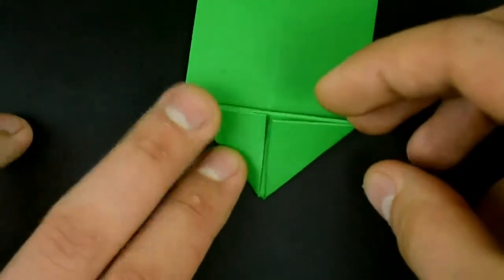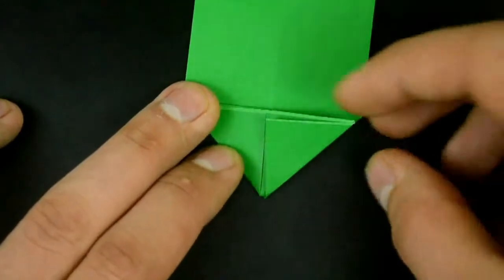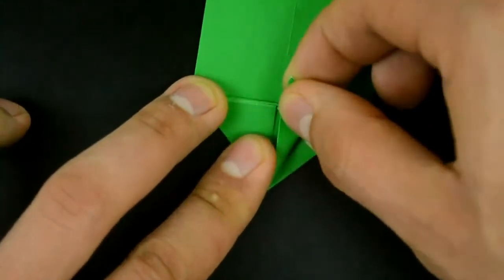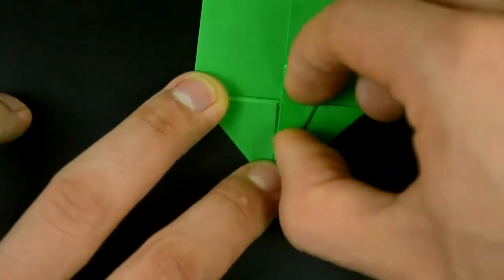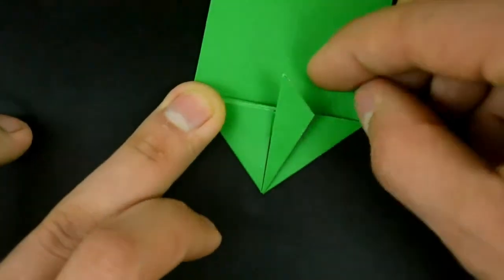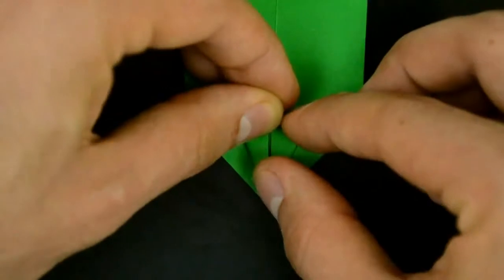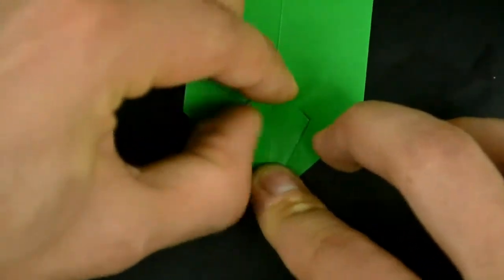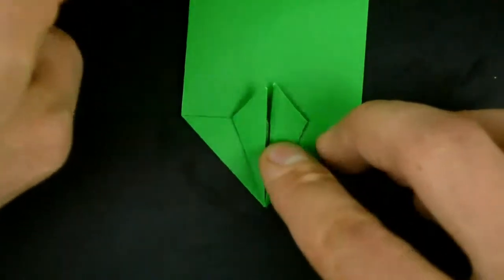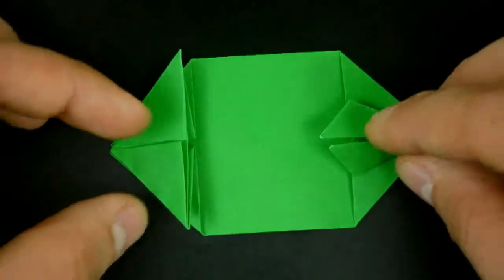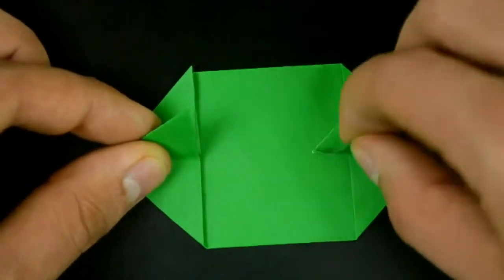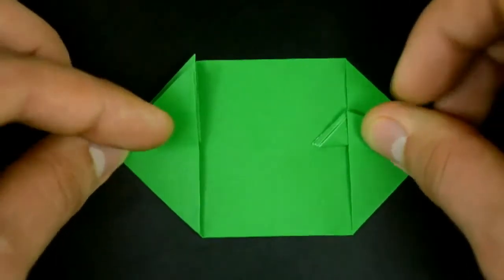Now fold the diagonal edge of this little flap to the middle. Bring the paper up. The same on the other, the left side. Then rotate in this position. Bring these folds up and fold the bottom edge to the middle.